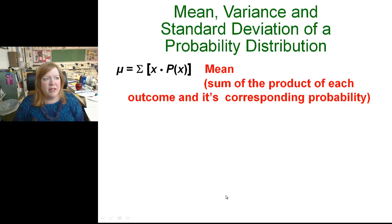So if we get started here, mean, variance, and standard deviation of a probability distribution. To find the mean, you take the sum of each possibility times its corresponding probability.